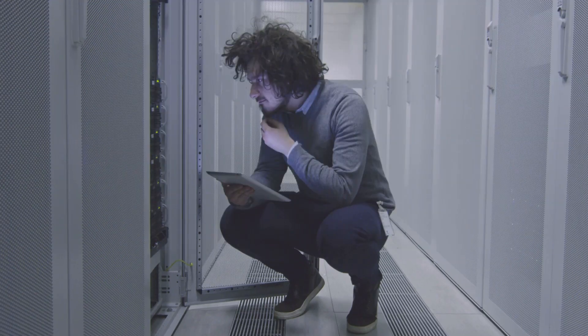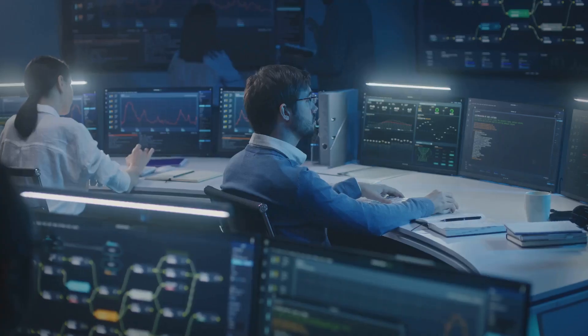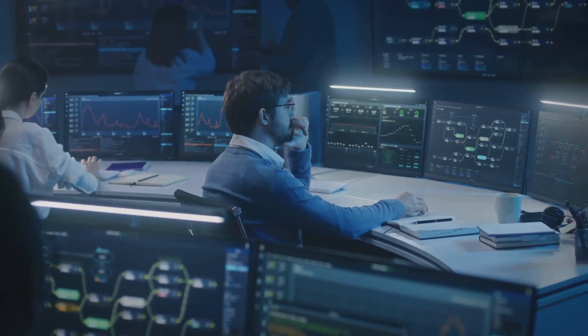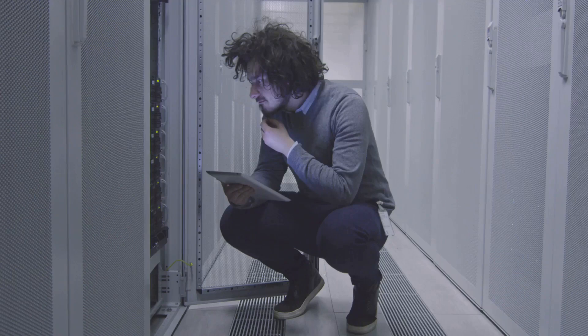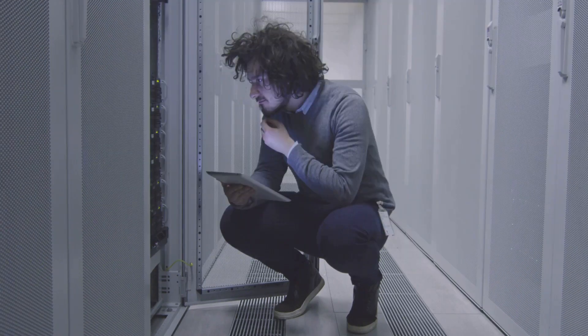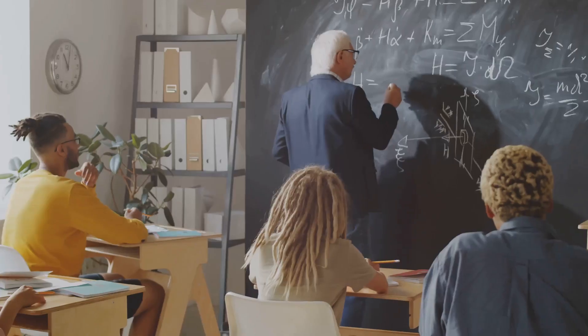Then came along computers, changing the game completely. In the late 20th century, mathematicians started using computers to verify the conjecture for large numbers. The first of these was a duo, Thomas Oliveira E. Silva and Silvio Pardi, who used a supercomputer to check all even numbers up to 4 trillion.